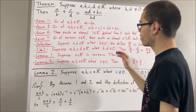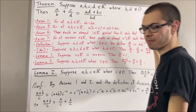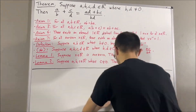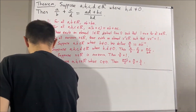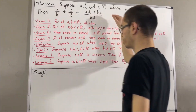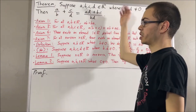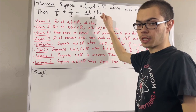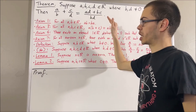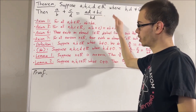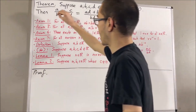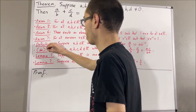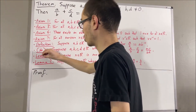Now let's move on to proving the main theorem. To prove this, we are going to be establishing a chain of equalities showing that these two expressions are equal. Through that chain of equalities, we are going to be using axioms 1 and 6, star, and lemmas 1 and 2.